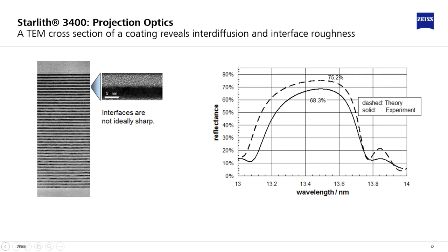Real coatings have lower reflectance and spectral and angular acceptance than the ideal multilayer. The picture on the left shows a TEM cross-section of a Mo-Si multilayer. The interfaces between the Mo and the Si layers are not ideally sharp, but exhibit a transition zone in which the concentration of the two materials changes gradually.